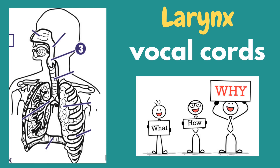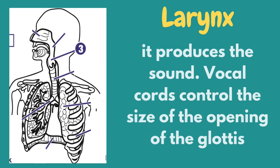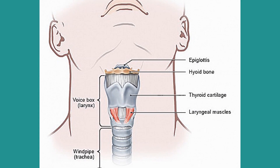Next is the larynx, also known as the voice box, because the vocal cords are located in the larynx. The larynx produces sound because the vocal cords control the size of the opening of the glottis and the amount of air needed to produce sounds. In males, the voice box or larynx is really prominent. We can identify the location of our voice box since it is protected by a thyroid cartilage known as the Adam's apple. It is also the reason why males have a deeper voice than females.